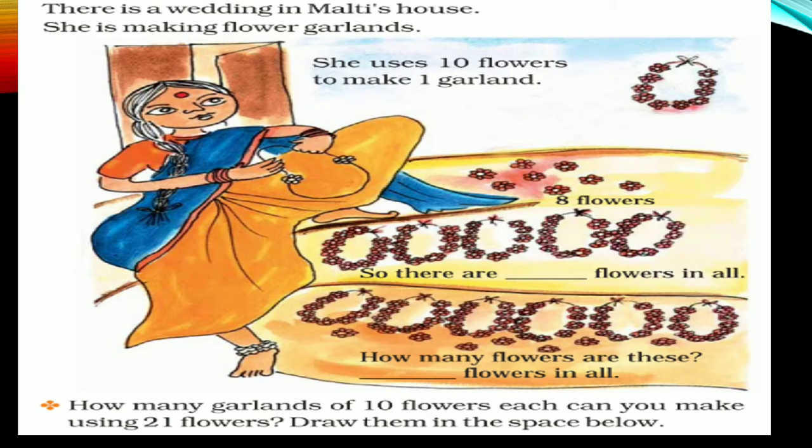And how many loose? 8. 50 and 8 is 58 flowers.